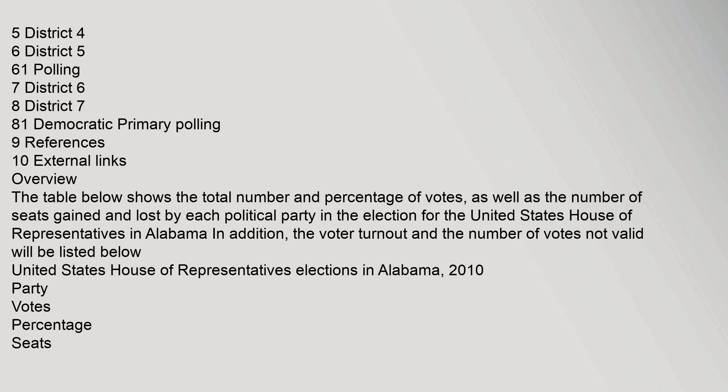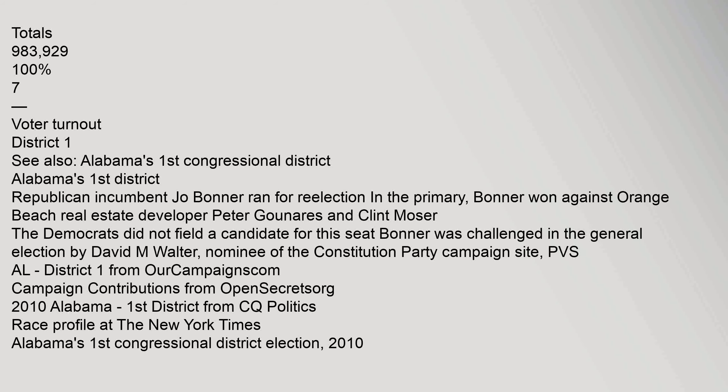The table below shows the total number and percentage of votes, as well as the number of seats gained and lost by each political party in the election for the United States House of Representatives in Alabama. Republican: 540,173 votes, 54.8%, 6 seats (gain of 2). Democratic: 417,491 votes, 42.2%, 1 seat (loss of 2). Others: 26,265 votes, 3.0%, 0 seats. Total valid votes: 983,929, 100%. Seven total seats.